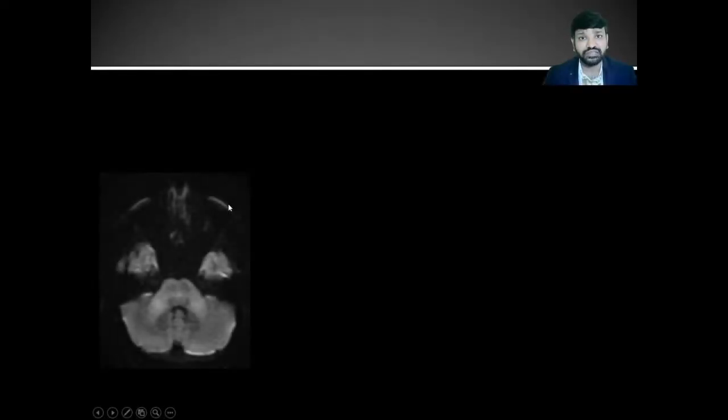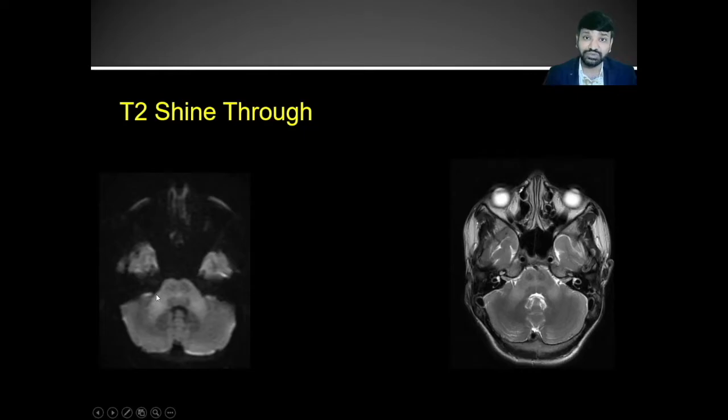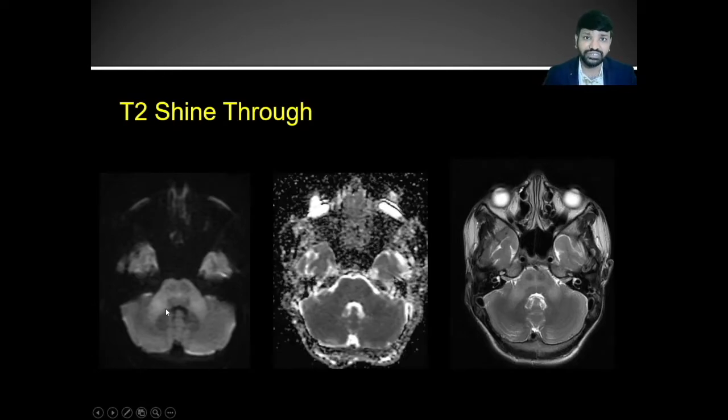Now there are some scenarios where even if you see bright signal on the diffusion, you may not call that restricted diffusion because of something called T2 shine-through. As shown previously, the B0 image is nothing but a T2-weighted image. So anything that looks bright on the T2-weighted image may look bright on the diffusion-weighted images also. So before labeling something as restricted diffusion, you should make sure that the same area is showing dark signal on the ADC.